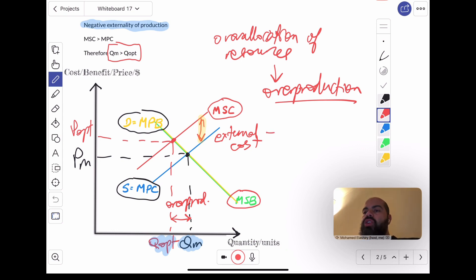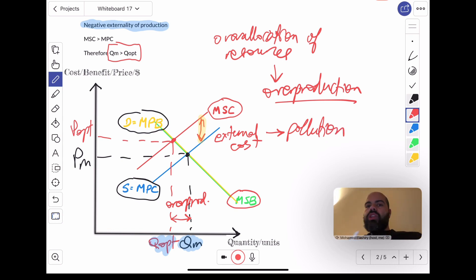Now, this external cost could be a situation of pollution. That includes all types of pollution. Water pollution, land pollution, air pollution, noise pollution, light pollution. Or, the external cost could be an unsustainable over-use of a common pool resource.